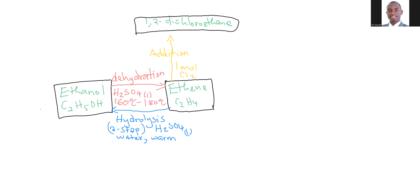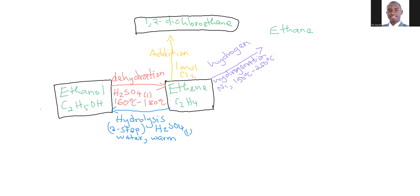Another important reaction is hydrogenation, where we are adding hydrogen to ethene. The process is called hydrogenation, and it takes place in the presence of nickel catalyst at a temperature of about 150 degrees C all the way to 250 degrees C. The product is ethane — C2H6. So we have converted an alkene to an alkane.